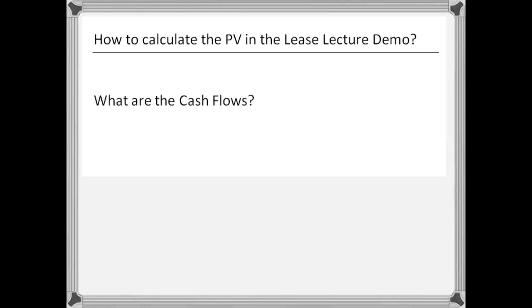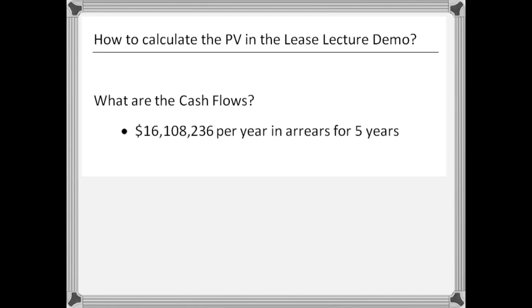The first thing that we need is the cash flows in the question, because like in any present value situation, we need to see what the cash flows are and when they actually happen. In the question that we had, there were the regular cash flows of $16,108,236 per year in arrears for five years. In addition, there was a $50 million guaranteed residual.